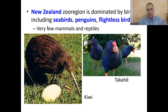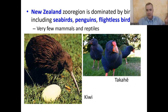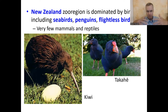From the Australian zoo region, we can go to the New Zealand zoo region. You might think they'd be similar since they're both 'down there,' but Australia and New Zealand are actually very far apart. New Zealand is way out there on its own. The New Zealand zoo region is extremely unusual because it is dominated by birds — specifically flightless birds.